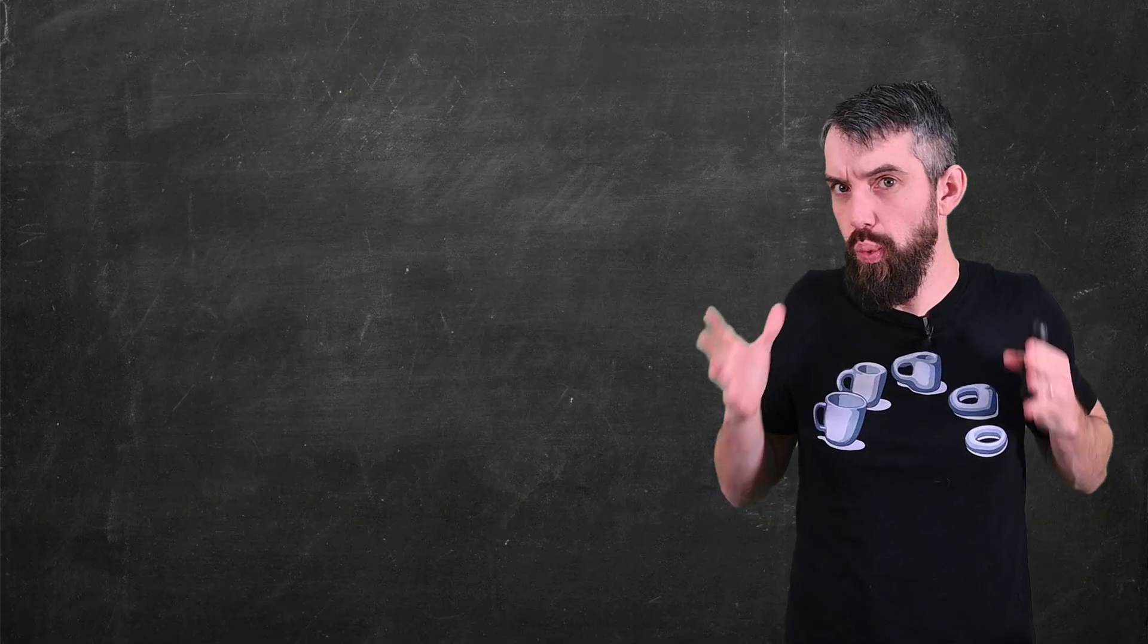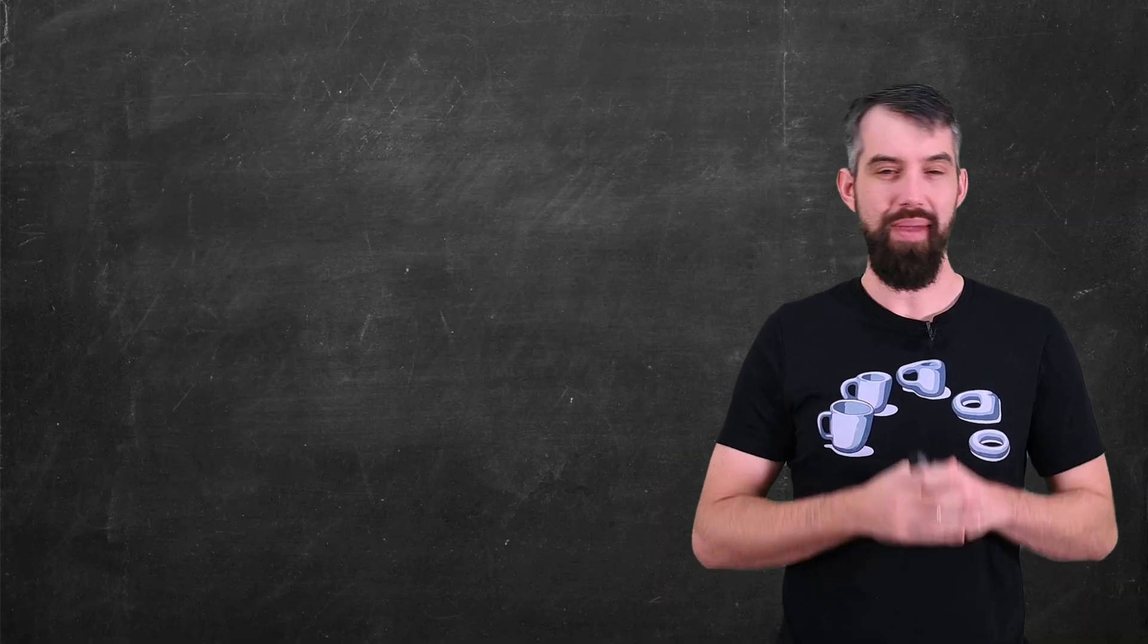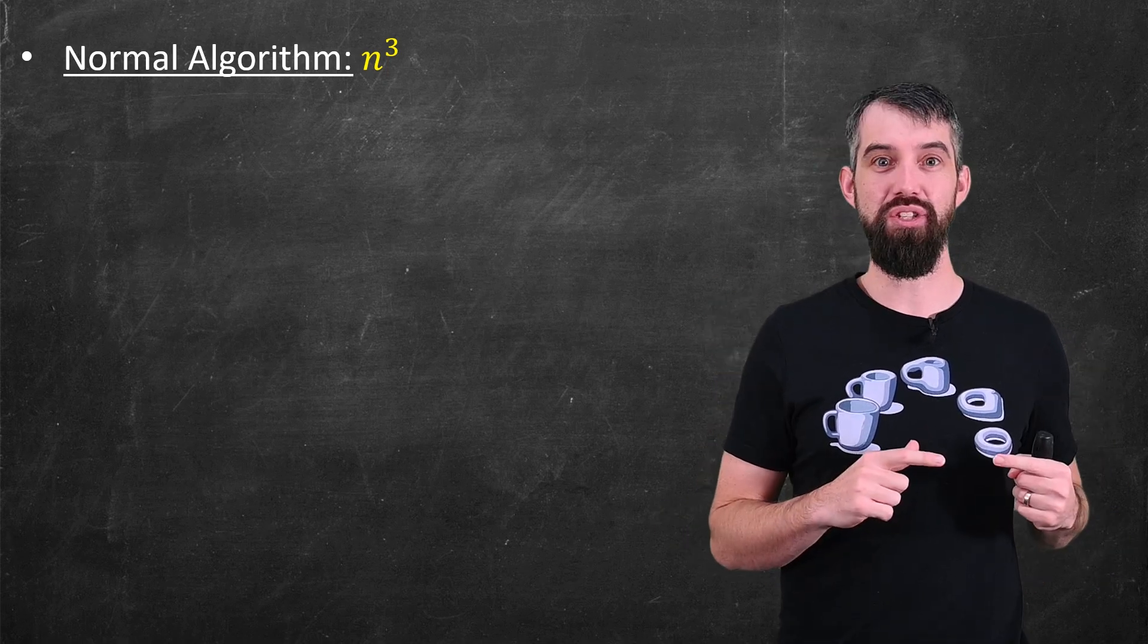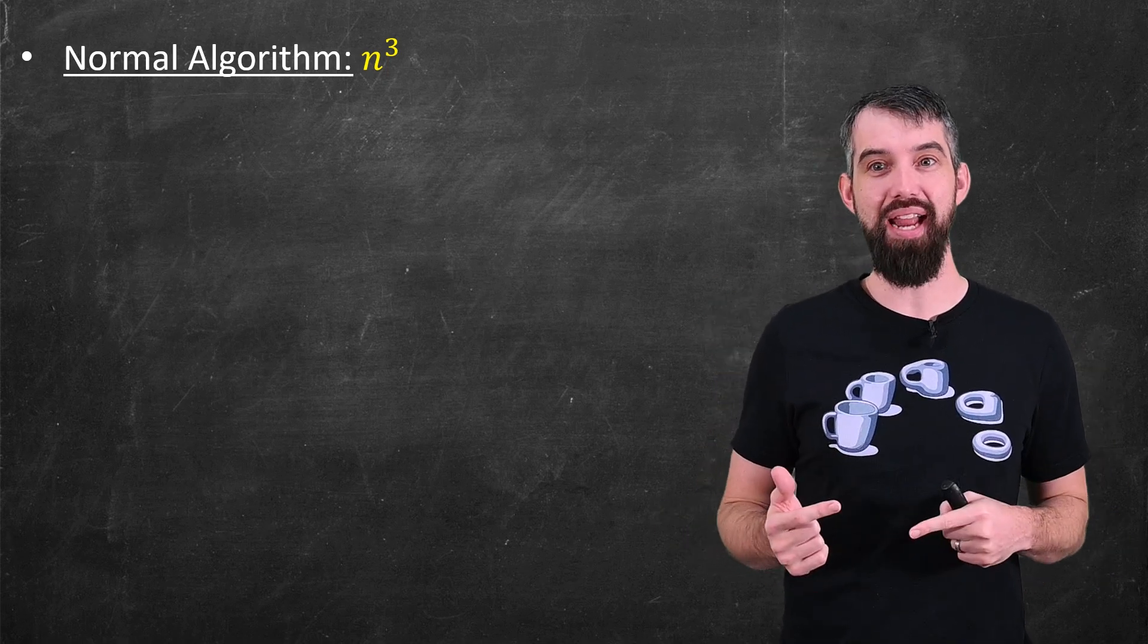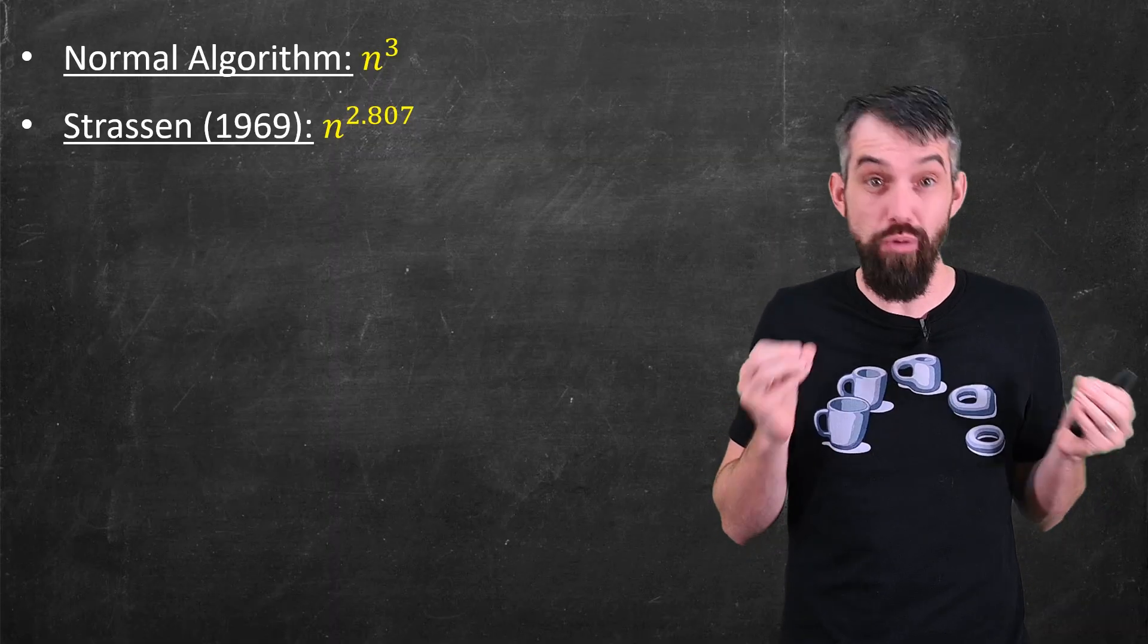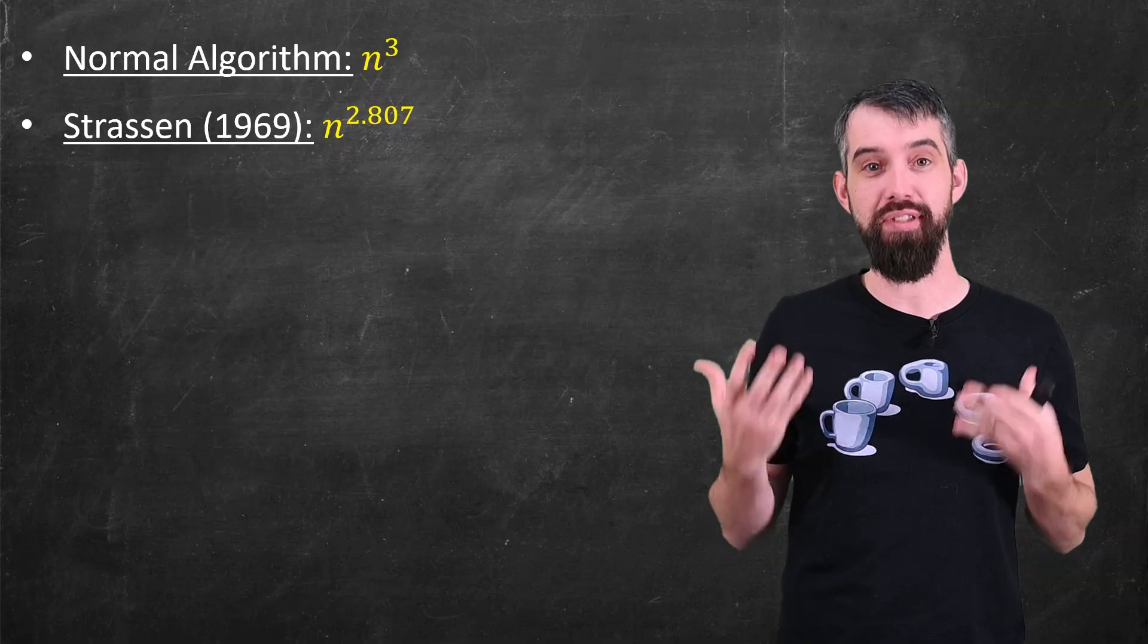Okay, so where are we in our story so far? If I use the original algorithm, it's going to give me that there's n cubed total multiplications that are needed. Then Strassen came along in 1969 and showed us that we can do better than n cubed. We can do n to the 2.807, or more generally log base 2 of 7.